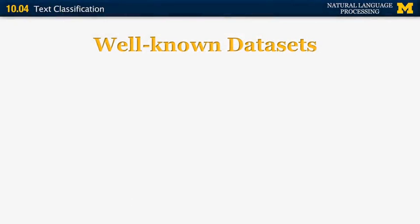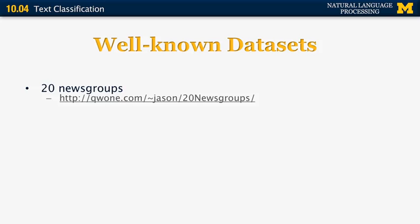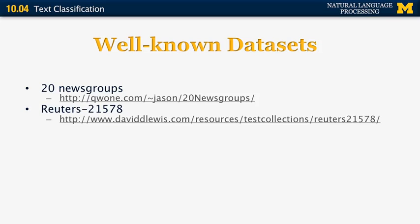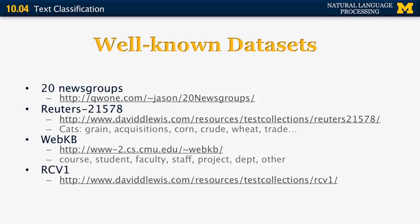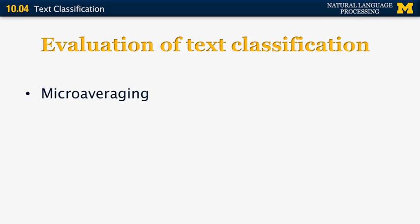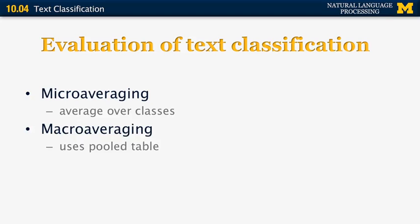Well-known datasets for text classification evaluation include: 20 Newsgroups — articles from Usenet groups on sports, politics, and technology; Reuters 21578 — about 20,000 Reuters documents from different categories, mostly business news about futures exchanges; WebKB — web pages from CMU about departments, people, and courses; and RCV1 — a Reuters collection with many more documents than Reuters 21578. For evaluation, one possibility is micro-averaging of performances per class, or macro-averaging using a pooled table.